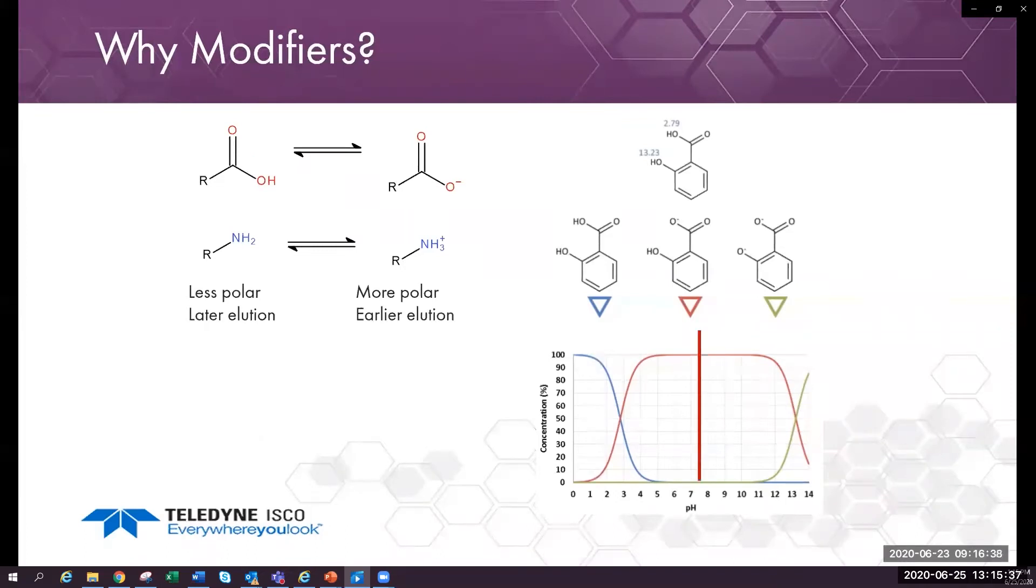In mid-range pH, the carboxylic acid is ionized and the compound elutes earlier, being more polar. At high pH, the phenolic group is also ionized and the compound elutes earlier still.